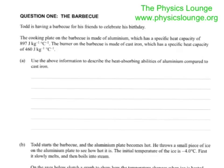The cooking plate on the barbecue is made of aluminium, which has a specific heat capacity of 897 joules per kilogram per degree Celsius. The burner on the barbecue is made of cast iron, which has a specific heat capacity of 460 joules per kilogram per degree Celsius. Use the above information to describe the heat absorbing abilities of aluminium compared to cast iron.